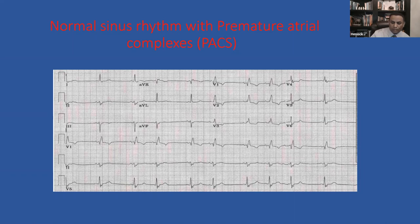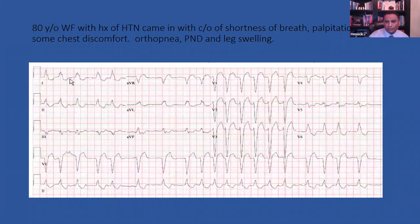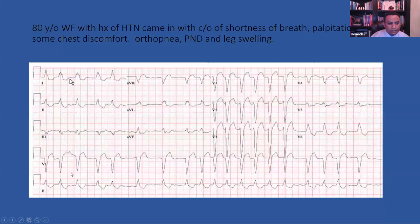First case: an 80-year-old white female with a history of hypertension who came in with shortness of breath, palpitations, chest discomfort, orthopnea, PND, and leg swelling — she had signs and symptoms of heart failure. Looking at the EKG, the R-to-R is irregular, there are no P-waves: this is atrial fibrillation. The EKG is a little bit more complicated than that, however.